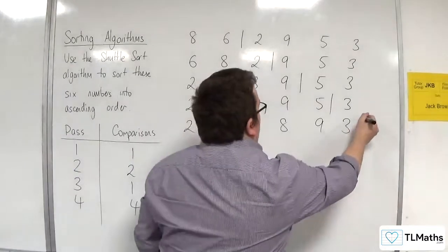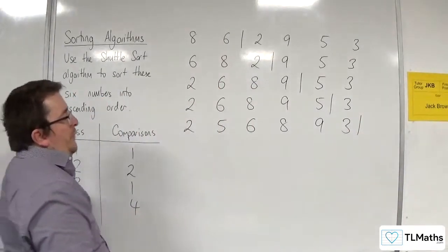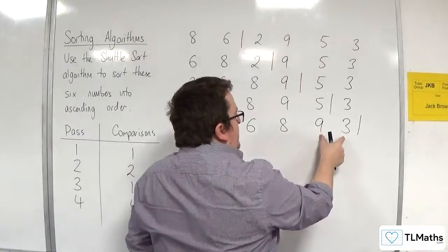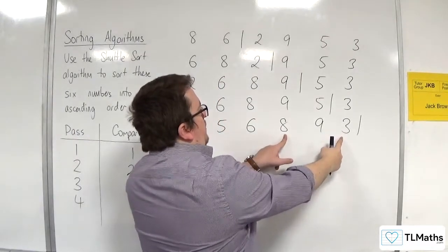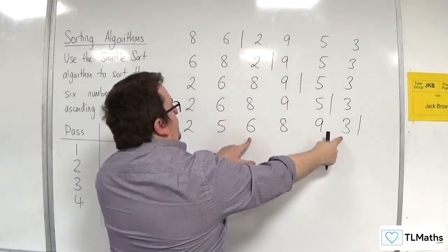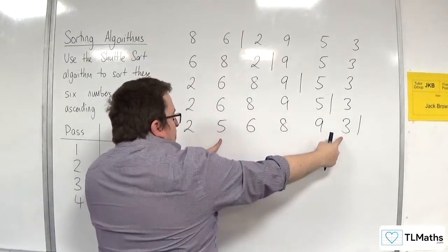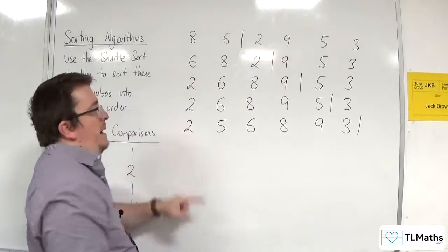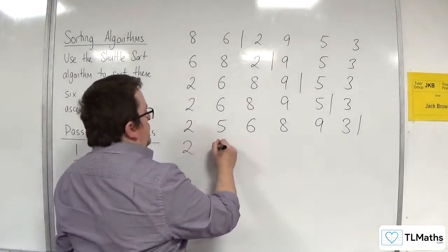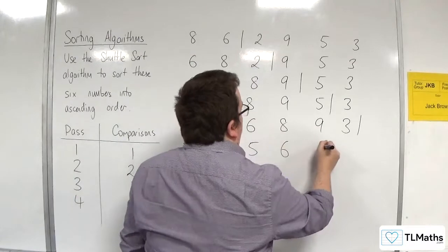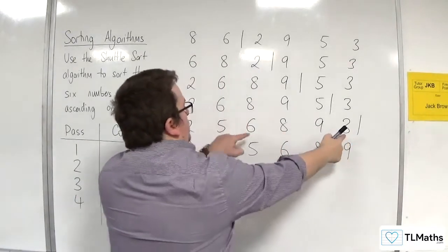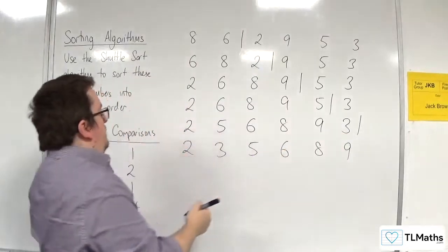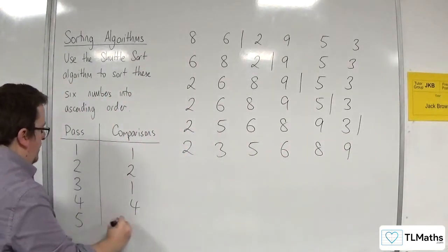Finally, we bring three into the mix. Three needs to get compared with nine, they will swap. Three will then compare with eight, which will swap. Three will get compared with six and swap. Three will get compared with five and swap. And then three gets compared with two, no swap. So two, three, five, six, eight, nine. That's one, two, three, four, five comparisons on the fifth pass.